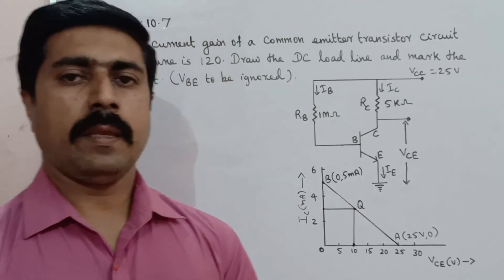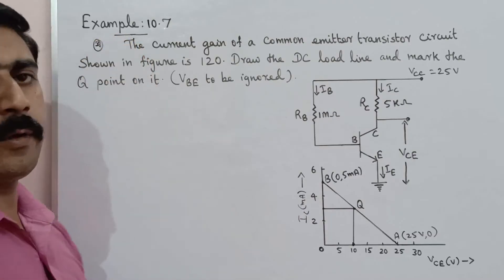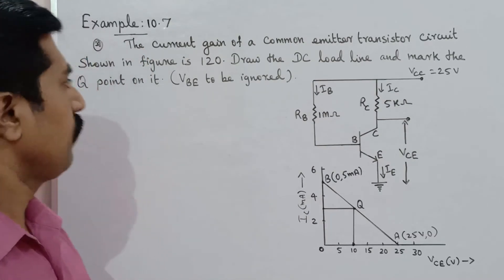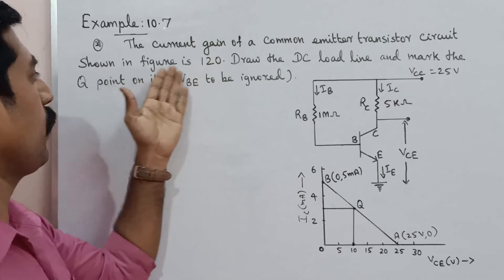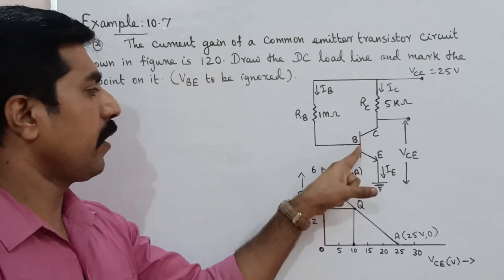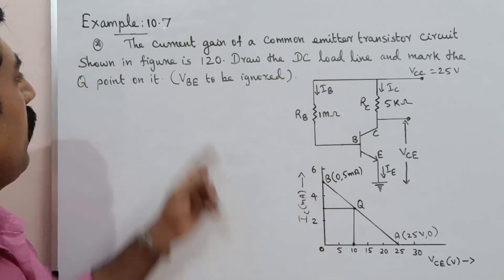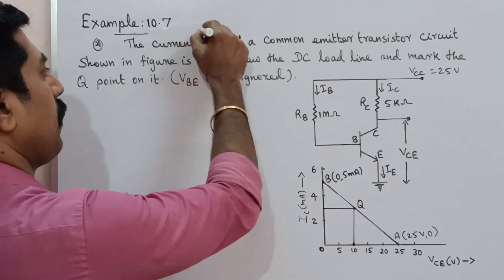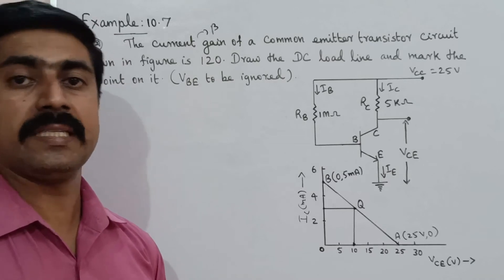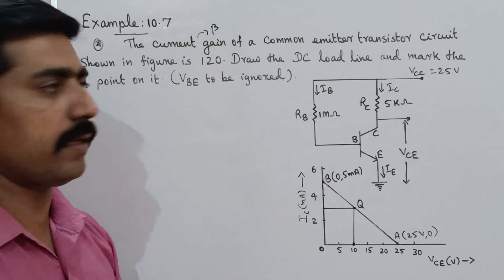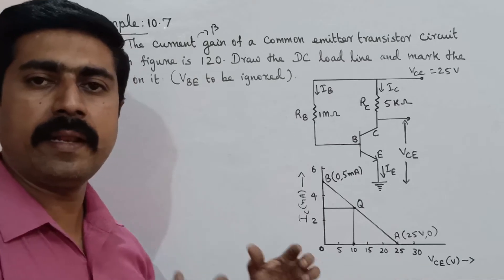Hi students, now we will talk about a very important problem — Problem 10.6. The current gain of a common emitter transistor circuit shown in the figure is 120. This is a common emitter configuration. The current gain beta for common emitter is 120.